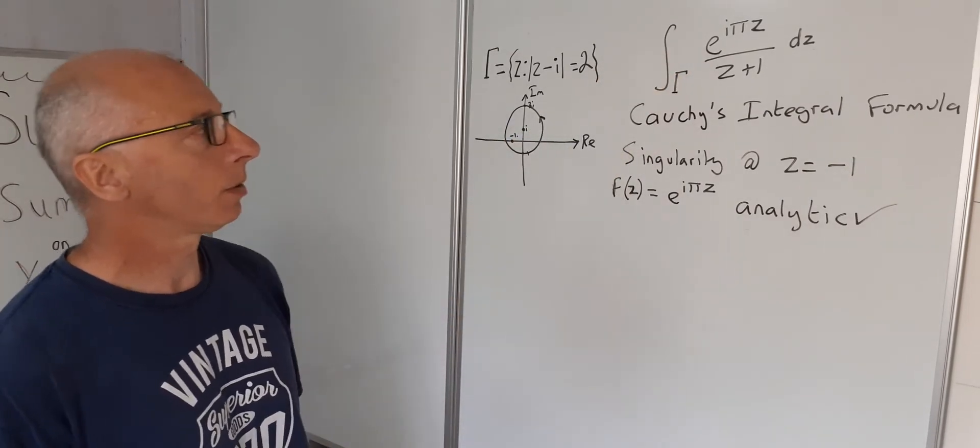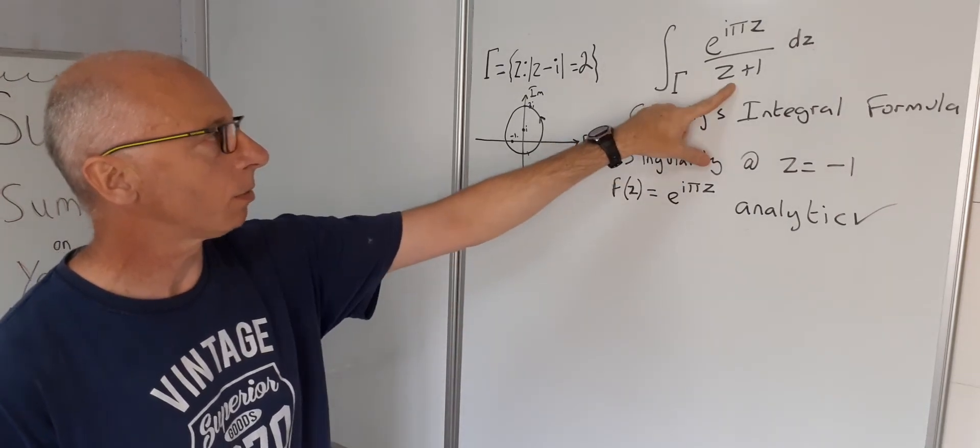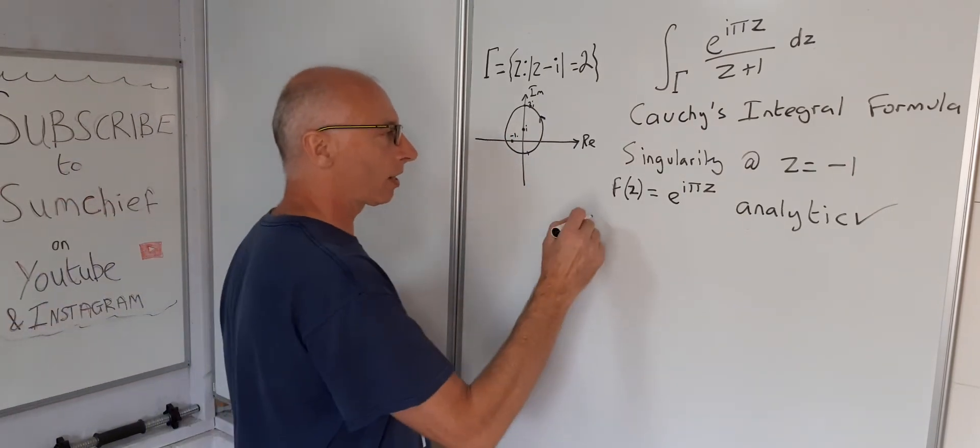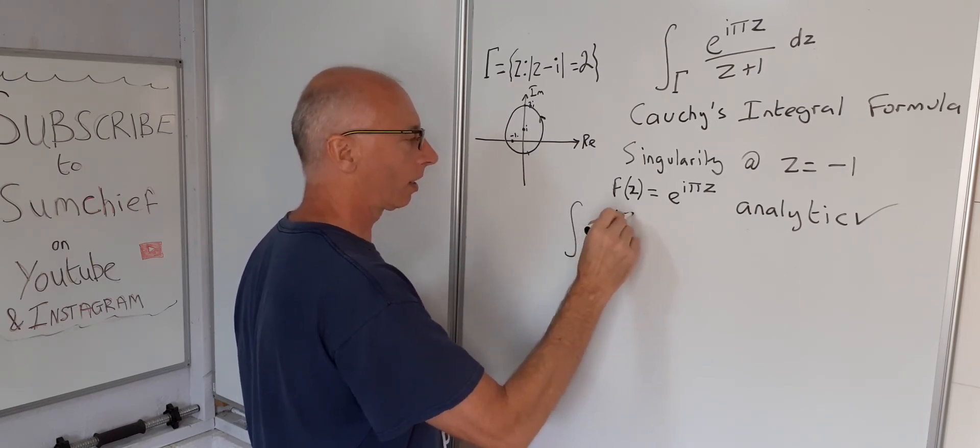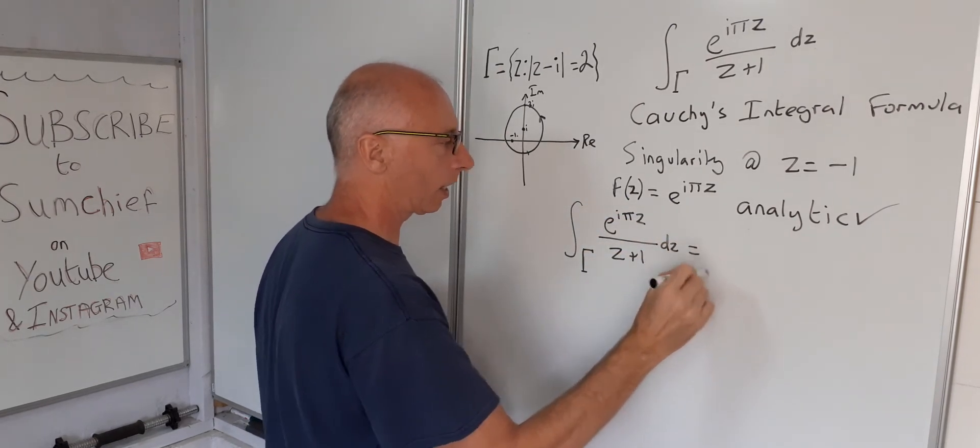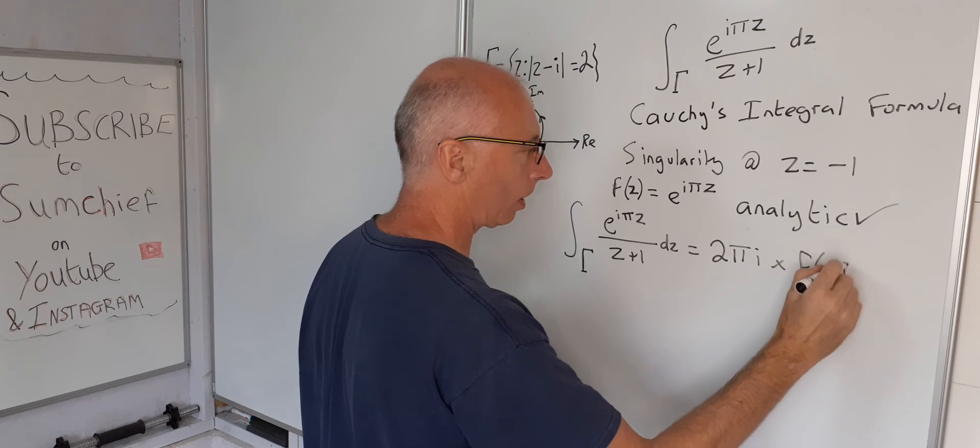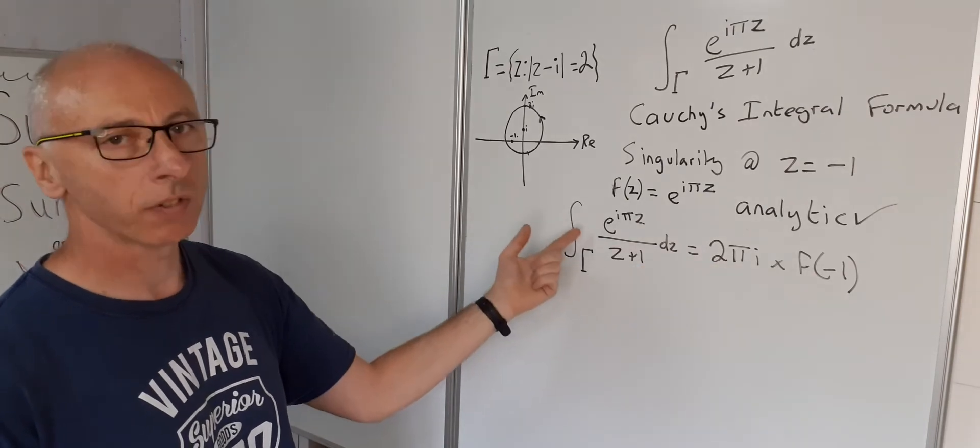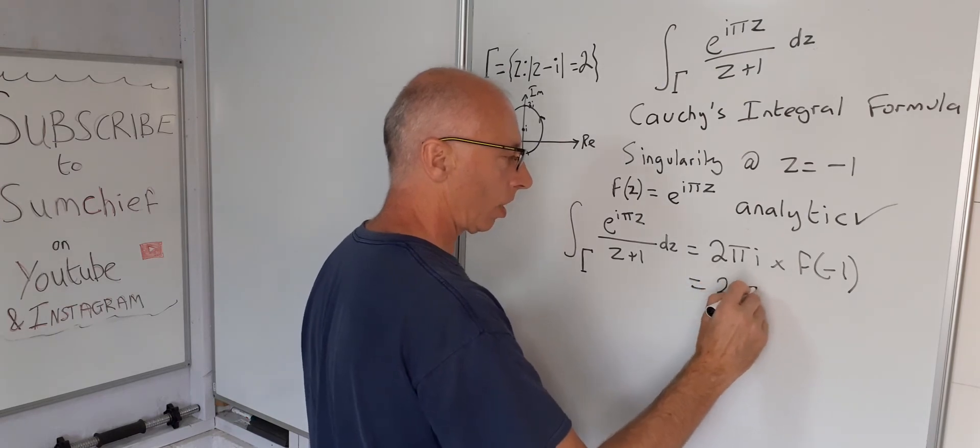So we don't need to do any integration now to get the answer to this integral. All we do now is just plug in where the singularity is, which is minus i, because we know it's inside this gamma here. What we say is now that integral across gamma of E to the I pi Z divided by Z plus I DZ equals 2 pi I times F at minus i. No integration at all. All we need to do is continue now and try and work that out.